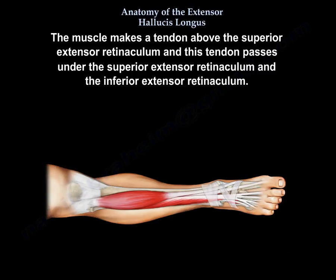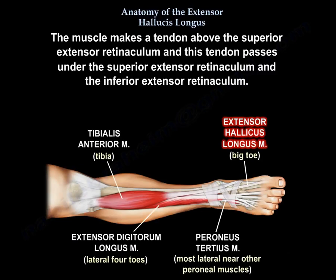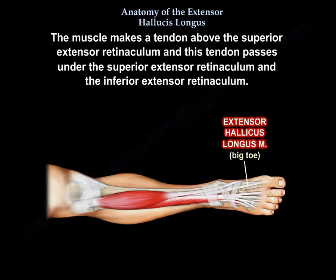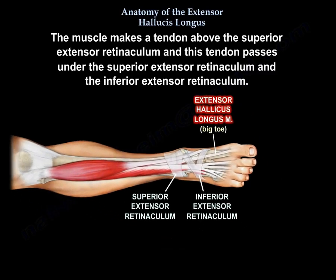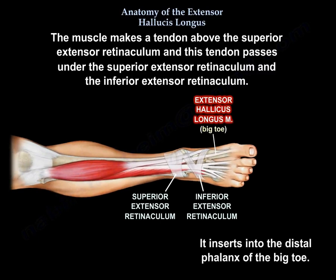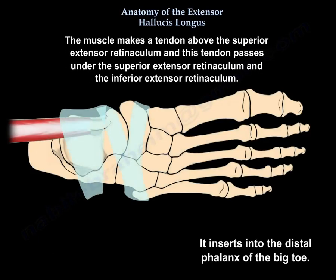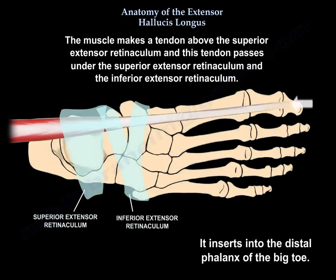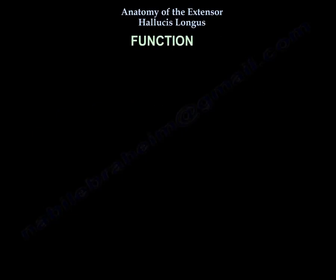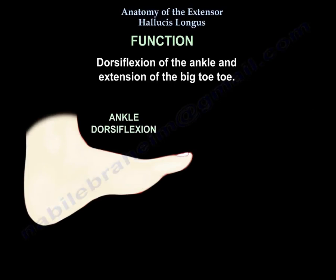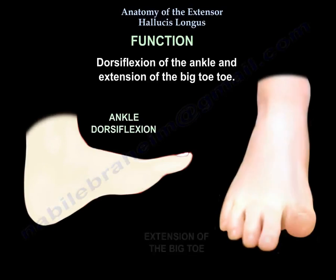The muscle makes a tendon above the superior extensor retinaculum, and this tendon passes under the superior extensor retinaculum and the inferior extensor retinaculum, inserting into the distal phalanx of the big toe. The function is dorsiflexion of the ankle and extension of the big toe.